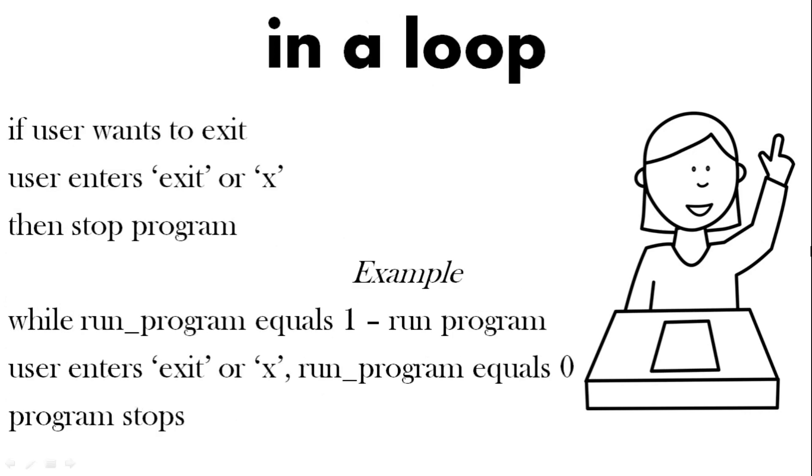So in the loop we're going to ask the user to put in something, for example exit or X. When you write the code you might run a loop. In this example here you've got run program equals one and then once you want the program to come out of that loop make run program equals zero and then the program will stop.